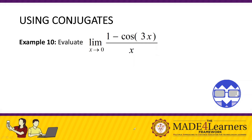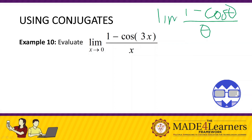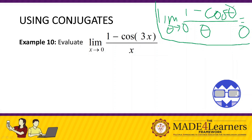Example 10: Evaluate the limit of one minus cos(3x) over x as x approaches zero. We use the same process, but now with theorem two: one minus cos theta over theta as theta approaches zero equals zero. Observing the given, we have 3x in the angle but the denominator is lacking 3. So we use the same process and multiply by 3 over 3.